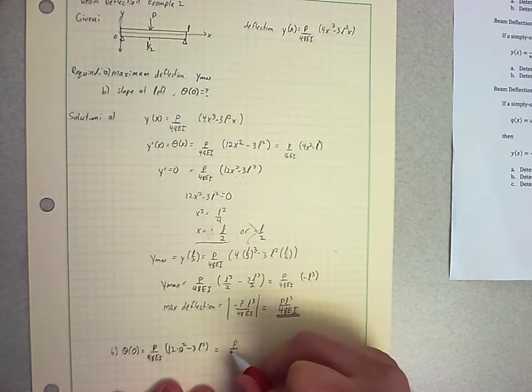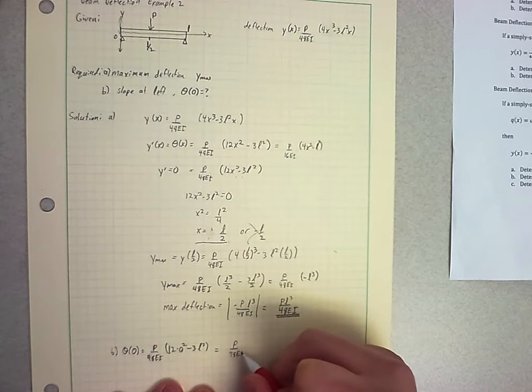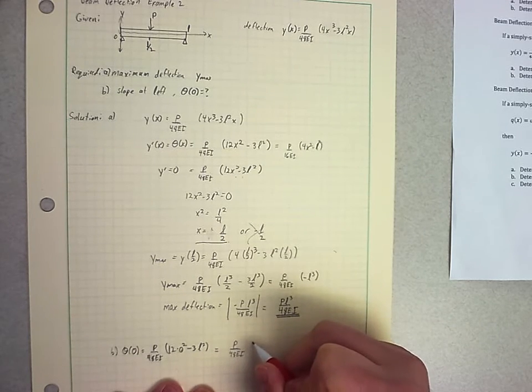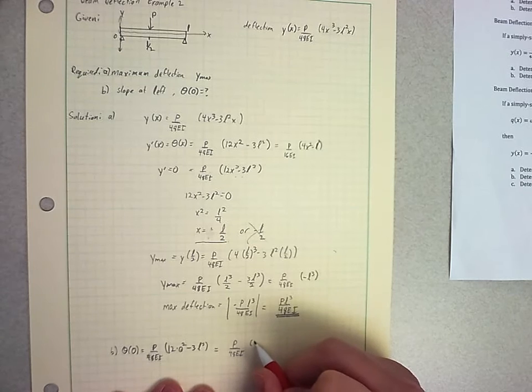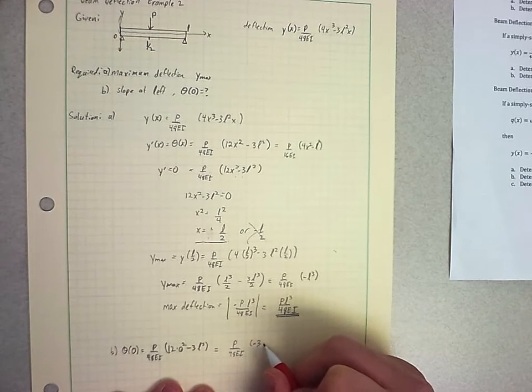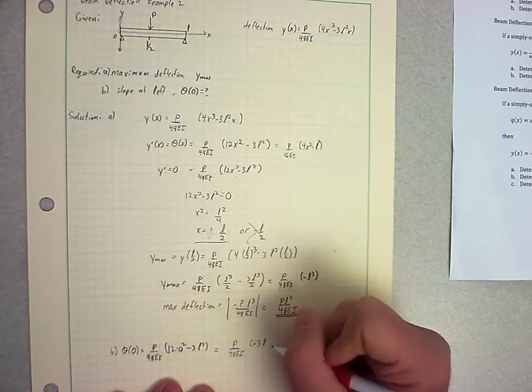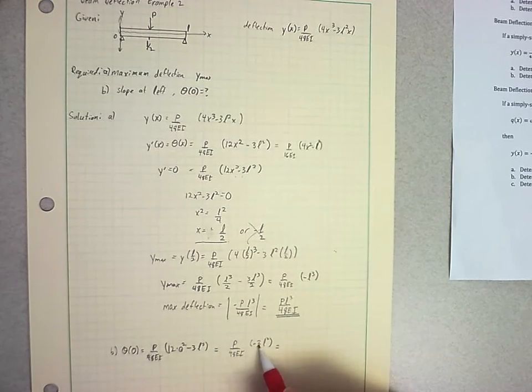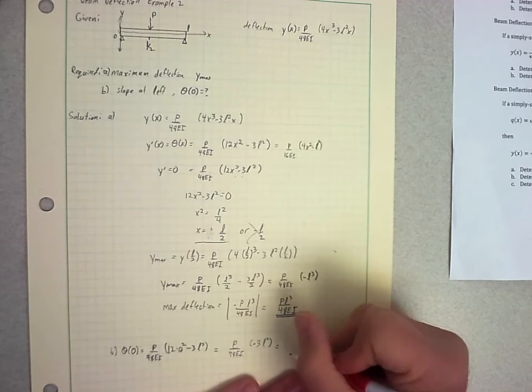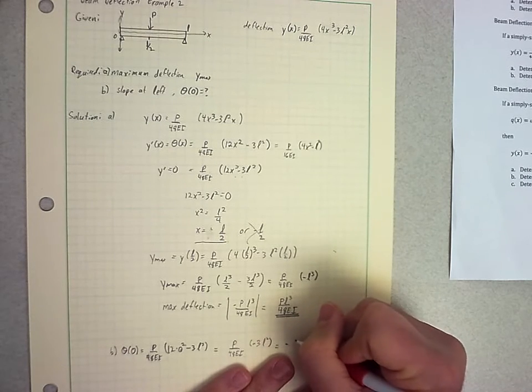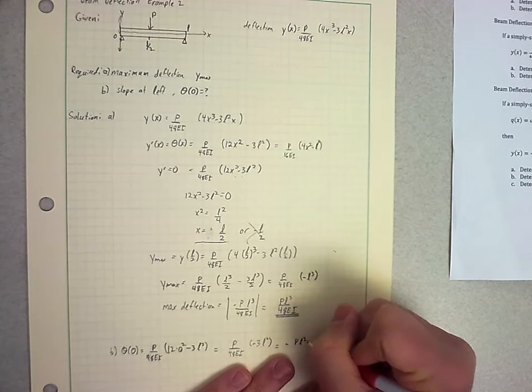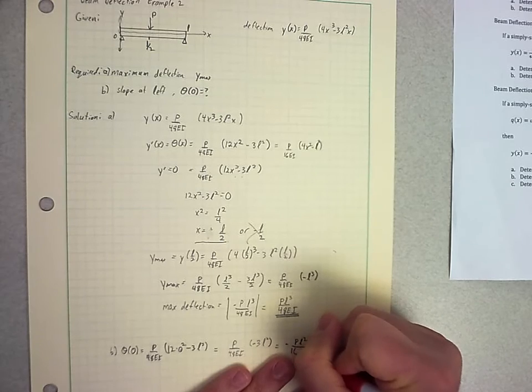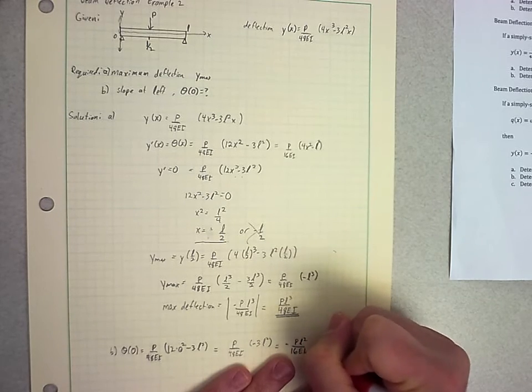And so again, I'll keep my coefficient out front for a second. I get 0, and I get negative 3L squared. I can simplify that a little bit because I've got a negative 3 and a 48. So I can get negative P times L squared over 16 E times I.